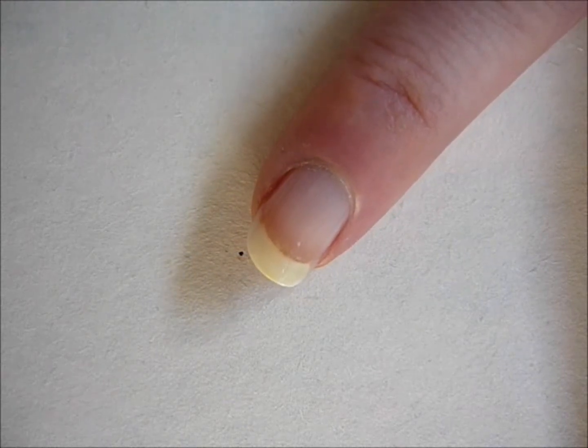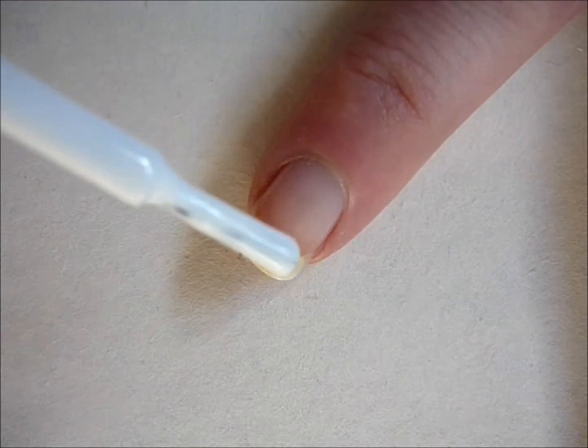Once you've applied a base coat and it has dried, using white nail polish, create an egg shape design.